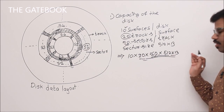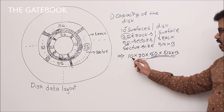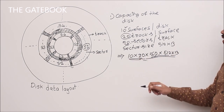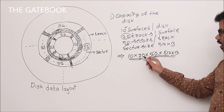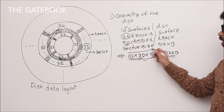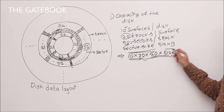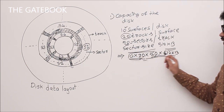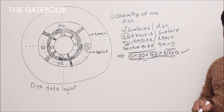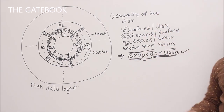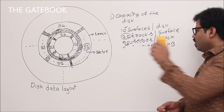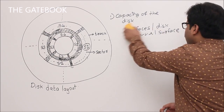Working through the calculation: 10 surfaces × 20 tracks = 200 tracks total. 200 tracks × 50 sectors = 10,000 sectors. 10,000 sectors × 512 KB = total disk capacity. That is how we easily calculate disk capacity.